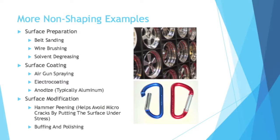Moving on to our final non-shaping examples: surface preparation. You can belt sand something, wire brush it, or degrease it using a solvent, kind of similar to a soap. All of those prepare the surface of an object for something more to happen to it — for example, you might wire brush something so that you can adhesively join it to something else.